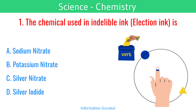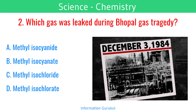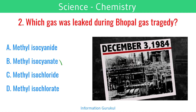The chemical used in indelible ink which is used in elections is silver nitrate. Which gas was leaked during the Bhopal gas tragedy? Methyl isocyanate.